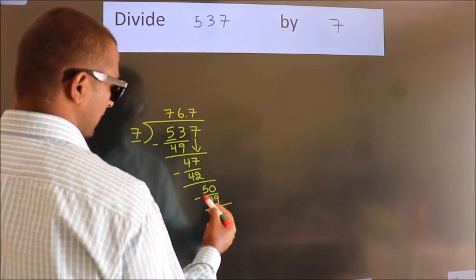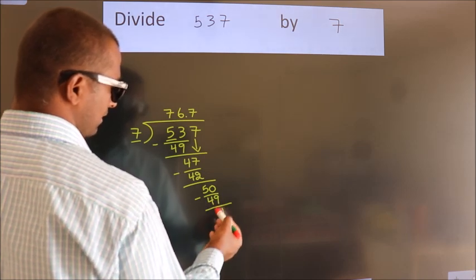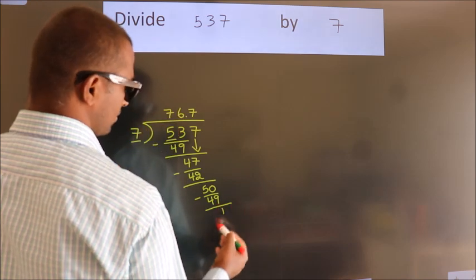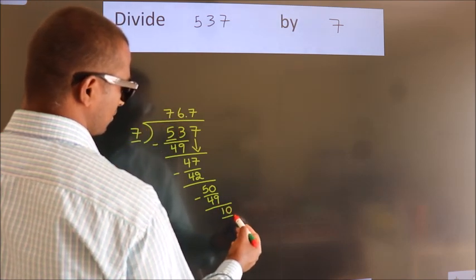Now, we subtract. We get 1. After this, we already have the decimal. So directly take 0. So 10.